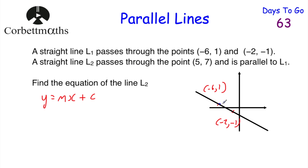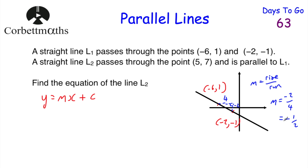We draw a right-angled triangle and use gradient m equals rise divided by run. Going from x equals −6 to x equals −2, the run is 4. The line goes downward from height 1 to −1, so the rise is −2. The gradient is −2 divided by 4, which equals minus one half. So the gradient of L1 is −½, and since L2 is parallel, its gradient is also −½. So y equals −½x plus c.